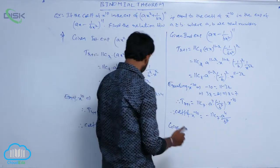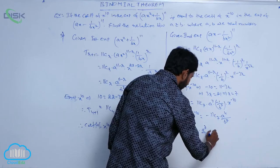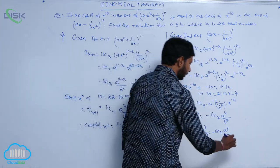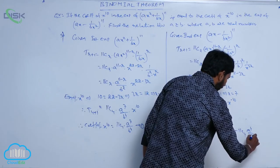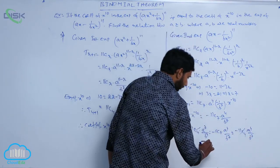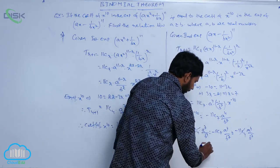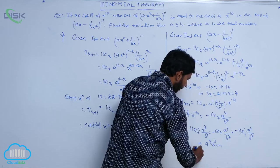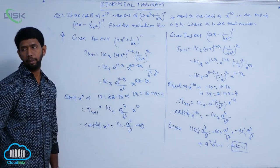Given the coefficients are equal: 11C4 · a^7 / b^4 = -11C7 · a^4 / b^7. Since 11C7 = 11C4, they cancel. Simplifying: a^(7-4) = -b^(4-7), so a^3 = -1/b^3, meaning a^3 · b^3 = -1. Therefore (ab)^3 = -1, and ab = -1.